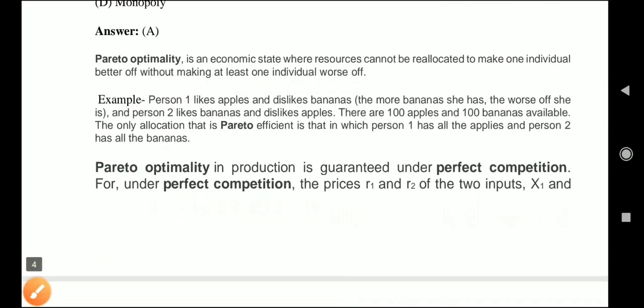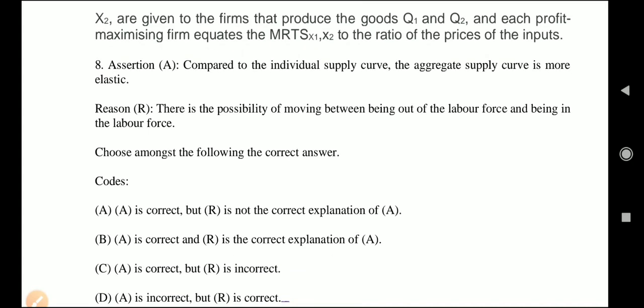Question 8 is assertion and reason based. Assertion: compared to the individual supply curve, the aggregate supply curve is more elastic. Reason: there is a possibility of moving between being out of the labor force and being in the labor force. The options are: A correct and R is its correct explanation; A correct but R is not the correct explanation; A correct and R incorrect; A incorrect and R correct.